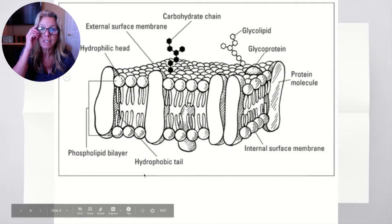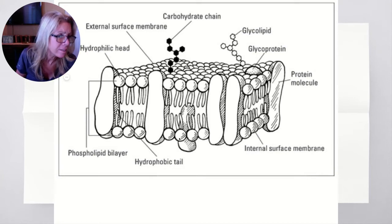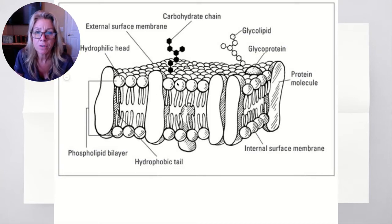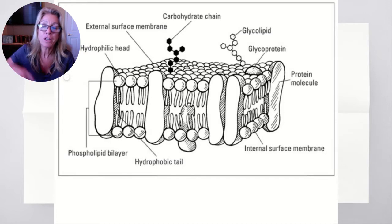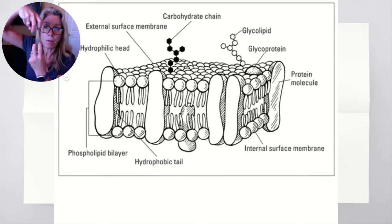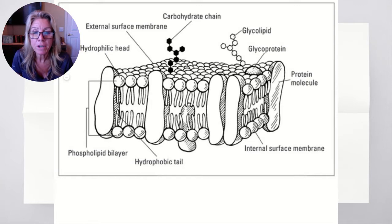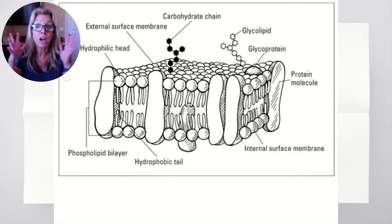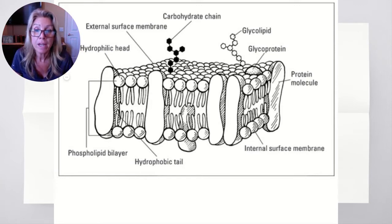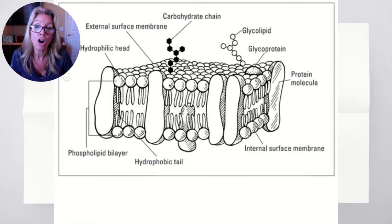Looking at this diagram, you can see the phospholipids — the circles and the tails hanging down. The fatty acid chains are hydrophobic, and the phosphate groups are hydrophilic. This makes sense in the setup of the membrane because the hydrophobic parts are hanging out in the middle of the membrane.